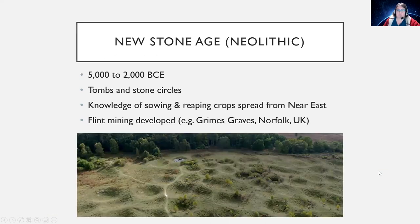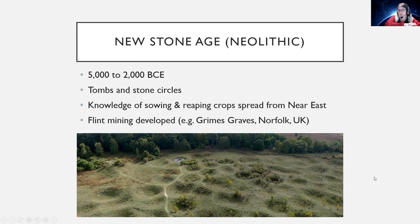The New Stone Age, or Neolithic, was from 5,000 to 2,000 BCE. It's at this point that you start getting tombs and stone circles, and the knowledge of sowing and reaping crops spread across Europe along the belt of the temperate zone from the Near East. We also have an instance of flint mining at Grimes Graves in Norfolk.